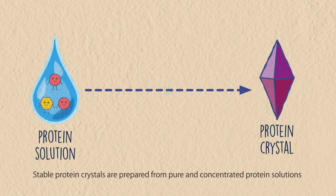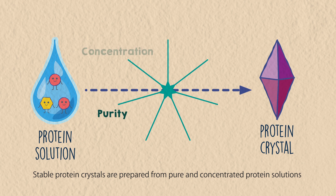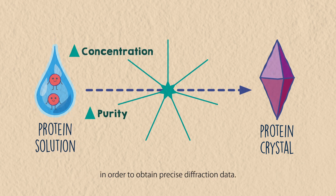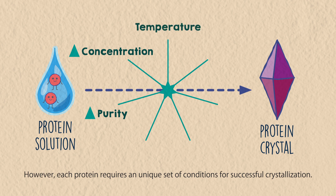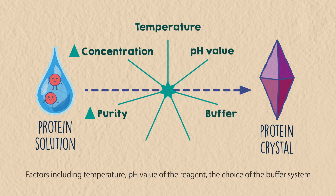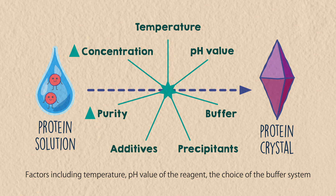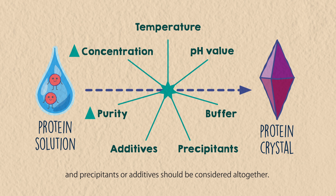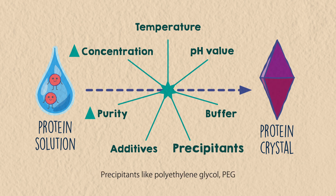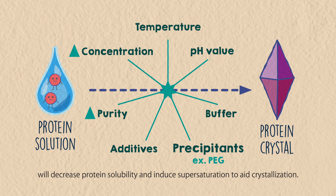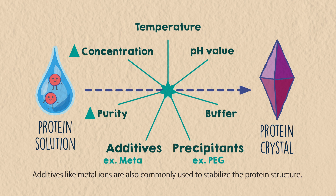Stable protein crystals are prepared from pure and concentrated protein solutions in order to obtain precise diffraction data. However, each protein requires a unique set of conditions for successful crystallization. Factors including temperature, pH value of the reagent, the choice of the buffer system, and the precipitants or additives should be considered altogether. Precipitants like polyethylene glycol, PEG, will decrease protein solubility and induce supersaturation to aid crystallization. Additives like metal ions are also commonly used to stabilize the protein structure.